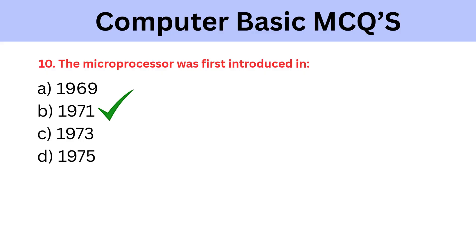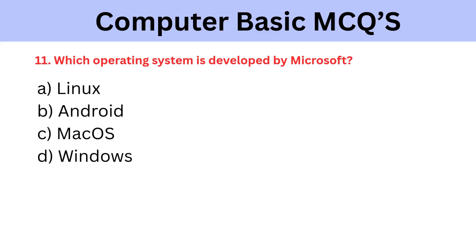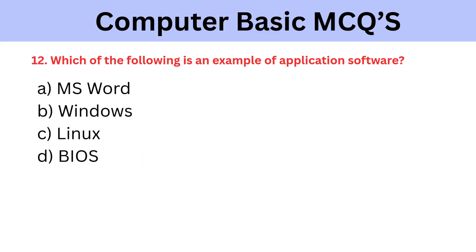The microprocessor was first introduced in which year? A) 1969, B) 1971, C) 1973, D) 1975. The correct answer is 1971. Which operating system is developed by Microsoft? A) Linux, B) Android, C) Mac OS, D) Windows. The correct answer is Windows.